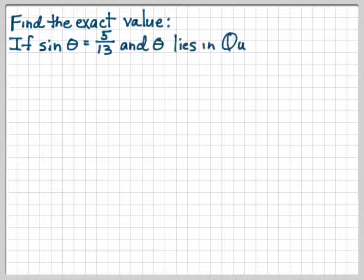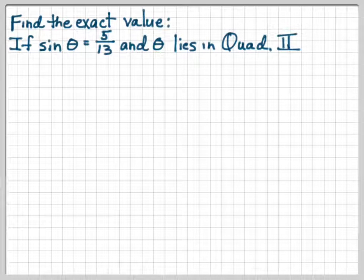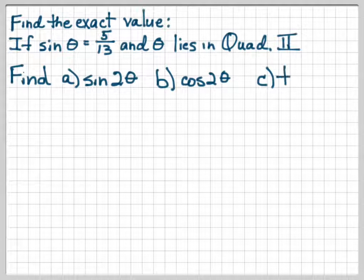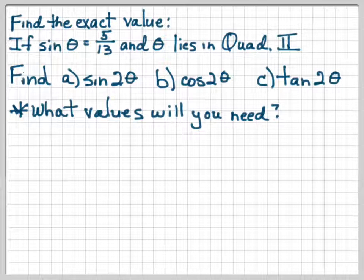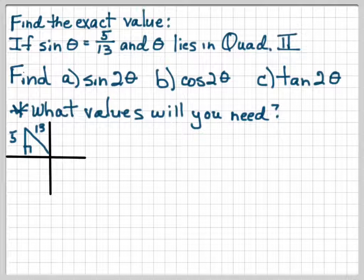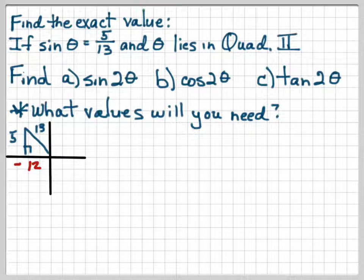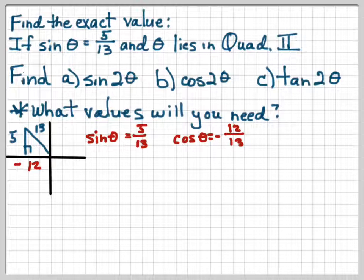We want to find exact values given that sine of θ is 5/13 and θ is in quadrant 2. We need to find sine of 2θ, cosine of 2θ, and tangent of 2θ. First, we need sine θ, cosine θ, and tangent θ to plug into our equations. In quadrant 2, if sine is 5/13, the opposite side is 5 and the hypotenuse is 13, making the adjacent side negative 12. So: sine θ = 5/13, cosine θ = −12/13, and tangent θ = −5/12.